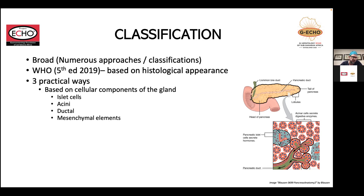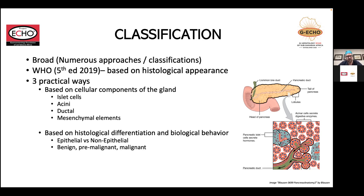To my way of thinking, there are three practical ways of classifying pancreatic neoplasms. The first is based on the cellular components of the gland: the pancreas is made up of islet cells, acinar cells, ductal and mesenchymal elements. Within each, you can subdivide into benign and malignant components. More commonly, they are based on histological differentiation or biological behavior. The WHO classifies these as epithelial or non-epithelial, with subclassification into benign, pre-malignant, and malignant lesions.